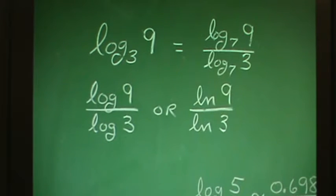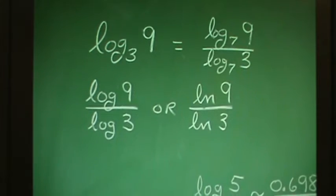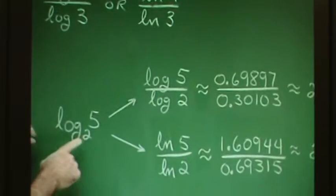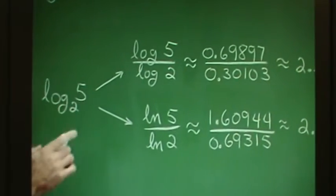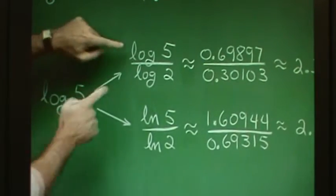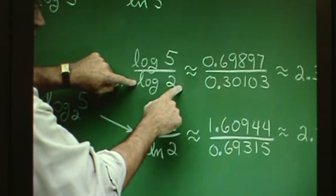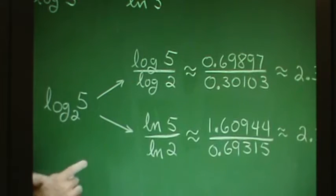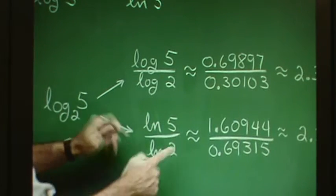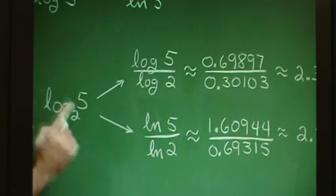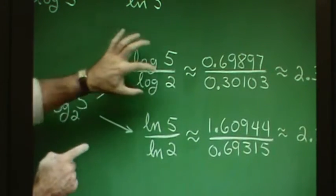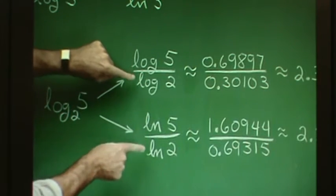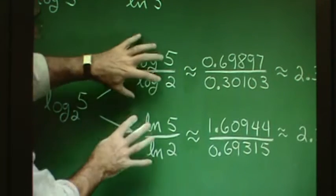Let's go through the calculation with the calculator one more time. If we're evaluating log of 5 in base 2, we can work it one of two ways. Using common logarithms, enter log 5 over log 2 and press enter. If we want to use natural logs, enter ln 5 over ln 2 and get the same result. Although these quotients are exactly the same, the numerators and denominators are different, but the quotients are identical.